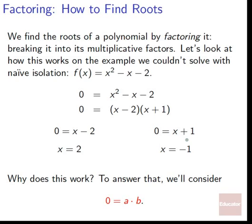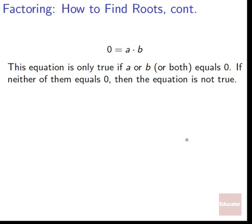Why does this work? Consider 0 = a · b. This equation is only true if a or b (or both) equals zero. If neither a nor b is zero — say a = 2 and b = 5 — we get 10, not zero. So for (x - 2)(x + 1) = 0, it must be that either x - 2 = 0 or x + 1 = 0, giving x = 2 or x = -1.